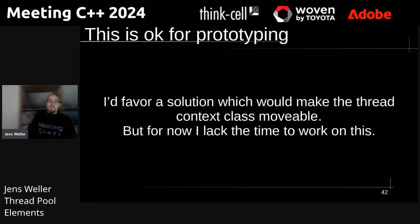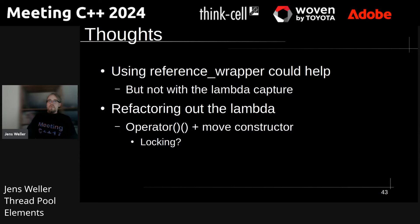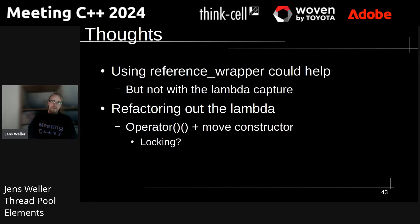I favor a solution which does not have this issue, and I'm pretty sure this is possible. One of the issues with the current prototype is that I thought a reference wrapper would help with moving references, but it doesn't help with the lambda capture. You would need to be able to factor out the lambda. When I don't use a lambda, I need a call operator executed in the thread, and the thread is owned by the instance. When the move constructor is called while the operator is executing in a different thread, do I need locking? I think the answer is yes.